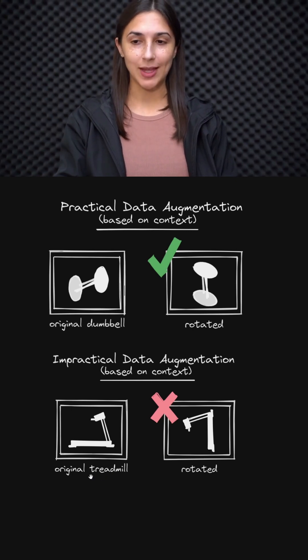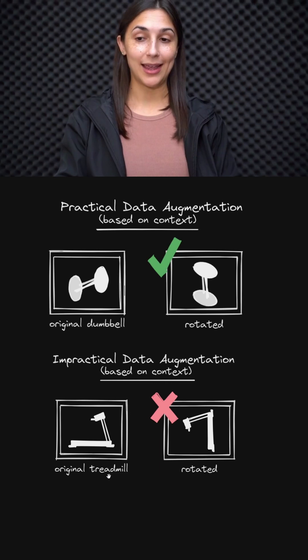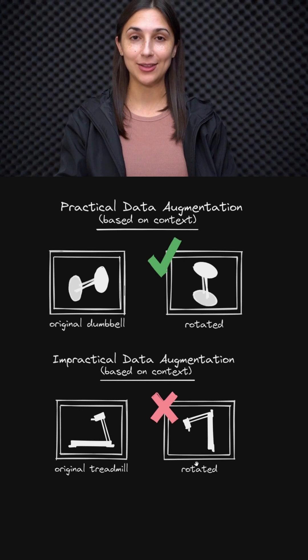However, if we have images of treadmills, for example, then perhaps it's not such a reasonable modification to rotate the treadmill such that they are positioned vertically like this. Because how often would a model be passed an image of a treadmill that is hanging from the ceiling or mounted on the wall in this way?